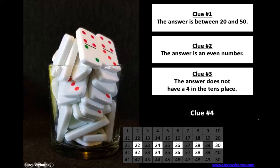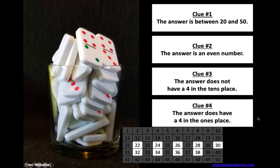Let's look at clue number four. The answer does have a four in the ones place. Again, we just looked at the tens place. In a two-digit number, the tens place is right here, which means that this is the ones place.